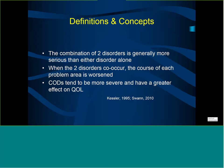When two disorders co-occur, the course of each problem area is worsened — the substance use disorder can make the psychiatric disorder much worse in terms of course and treatment, and vice versa. People with co-occurring disorders tend to have much more impairment in psychosocial functioning and a greater negative impact on quality of life.